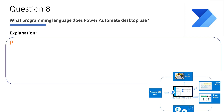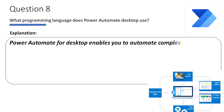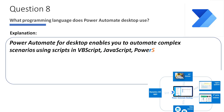Power Automate Desktop enables you to automate complex scenarios using scripts in VBScript, JavaScript, PowerShell, and Python. Power Automate Desktop provides six scripting actions that satisfy almost every automation scenario. Through these actions, you can run complex Microsoft Windows and web operations using short blocks of code.